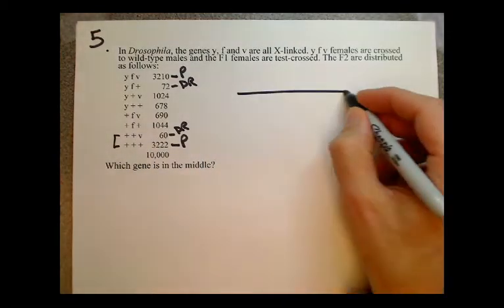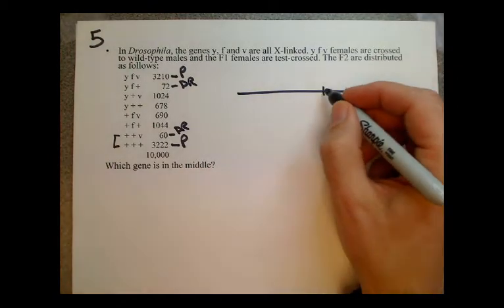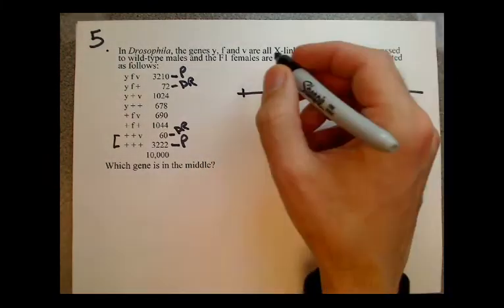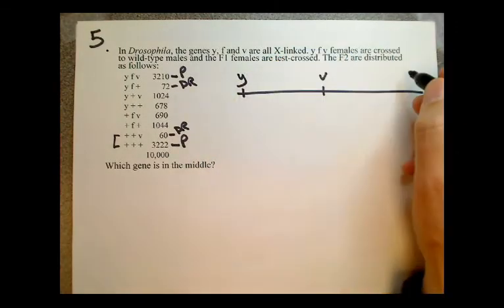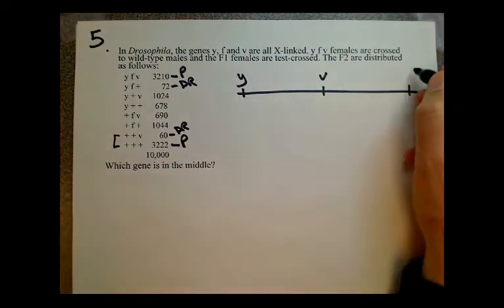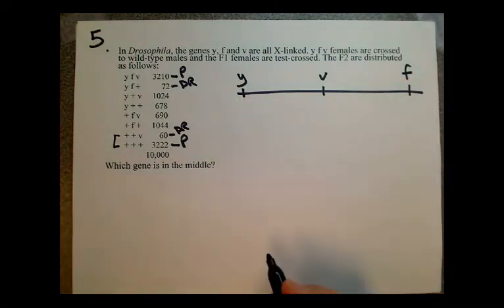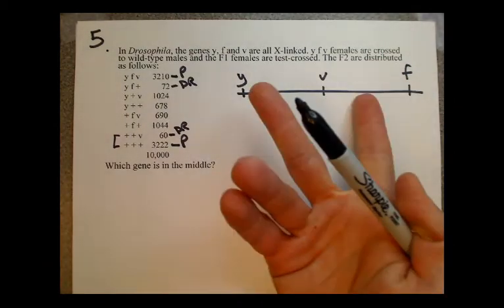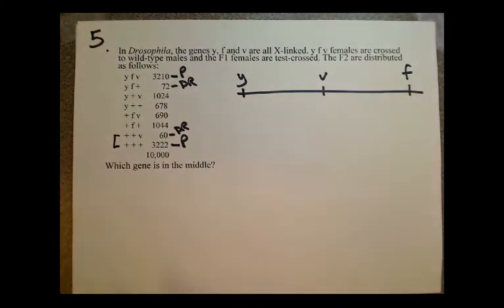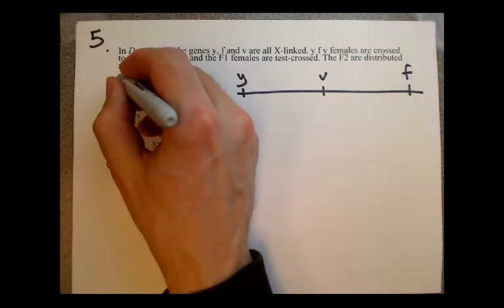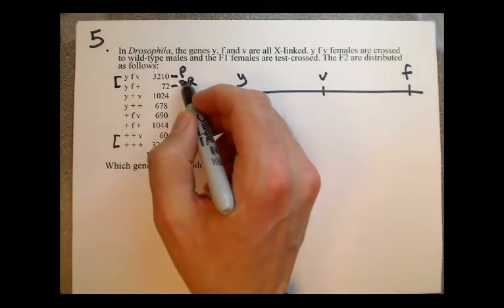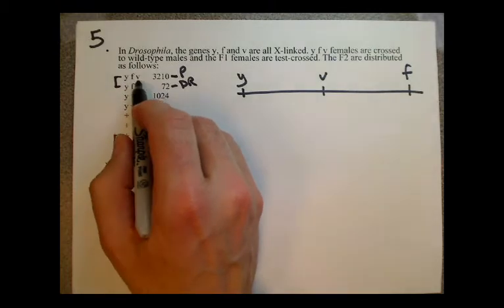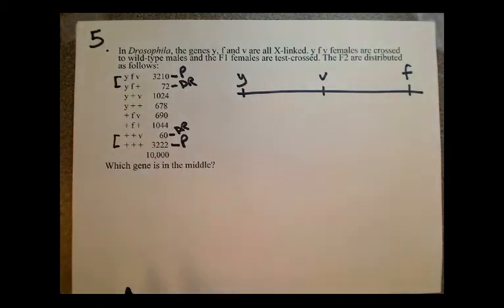So if we draw this map, we have V in the middle and Y on one side and F on the other side. The order of these things doesn't really matter — you can flip this end for end. The important thing is that V is in the center. If you compare these parentals and double recombinants again, you would see that Y matches, F matches, and V doesn't, which puts V in the middle.